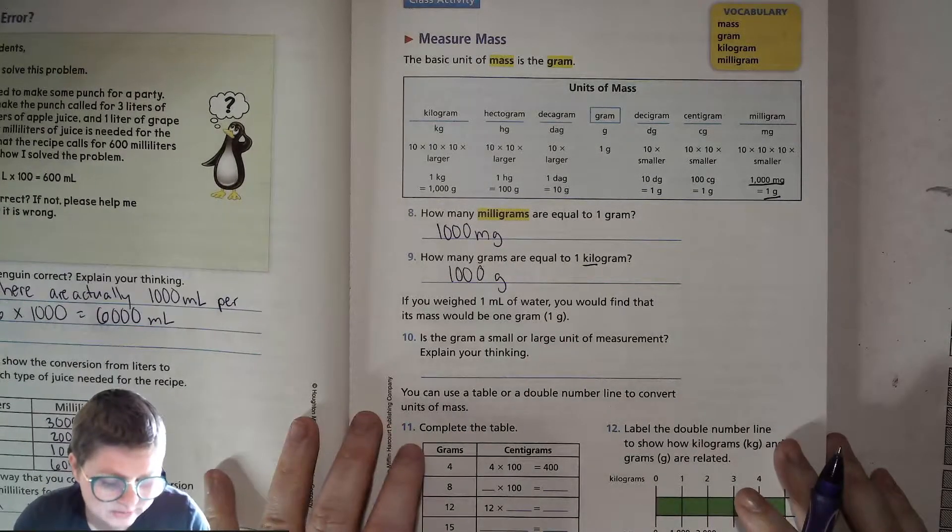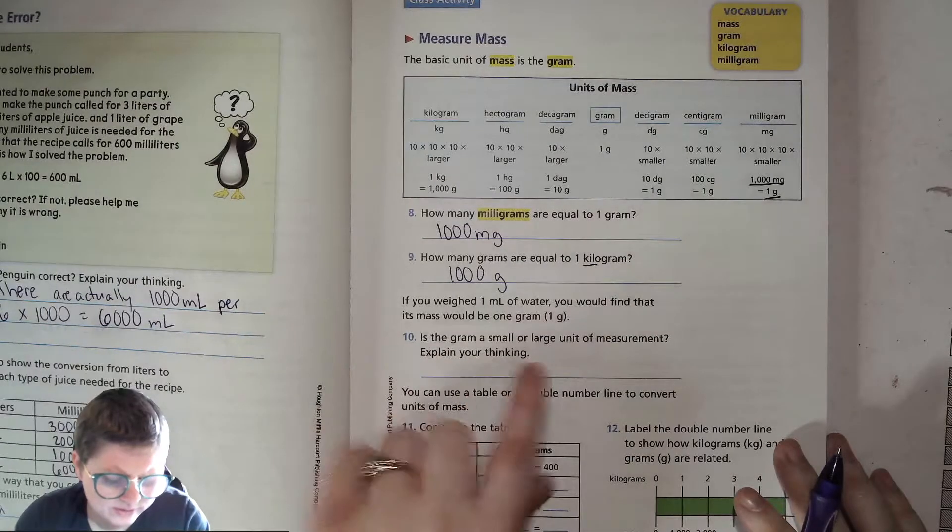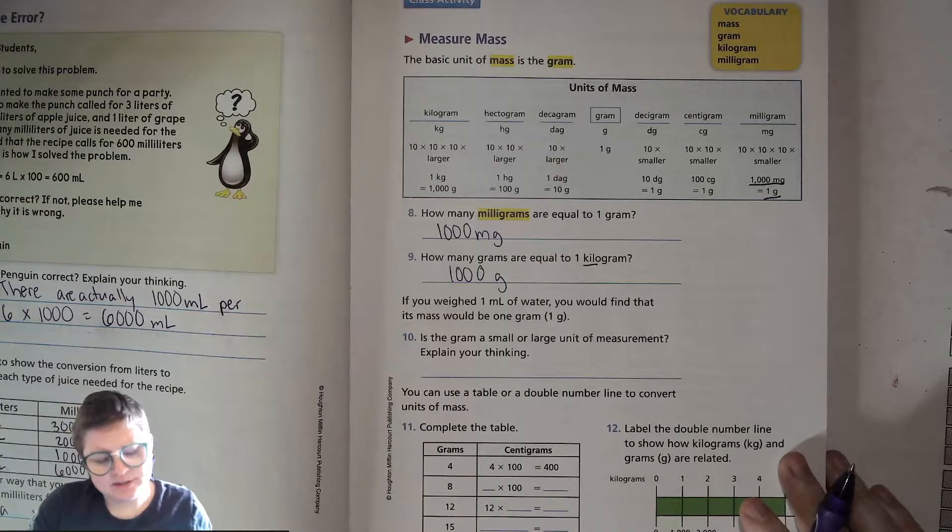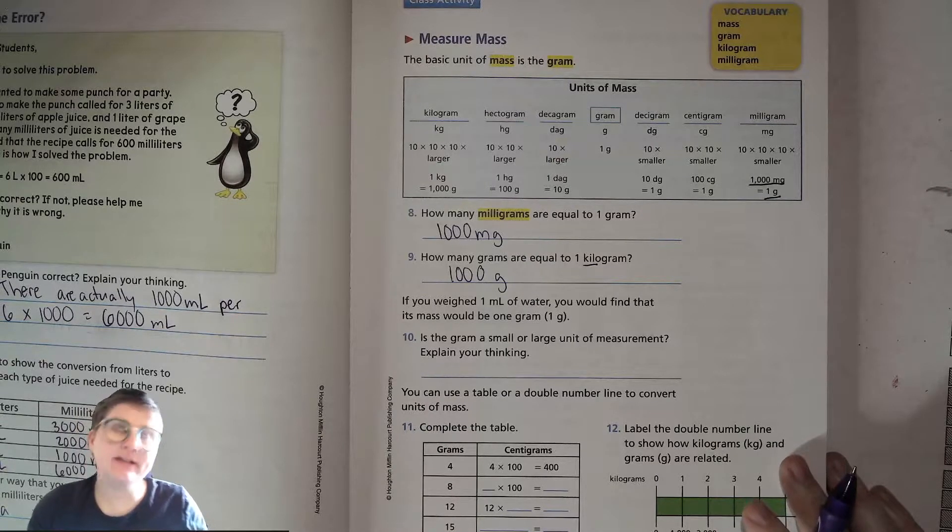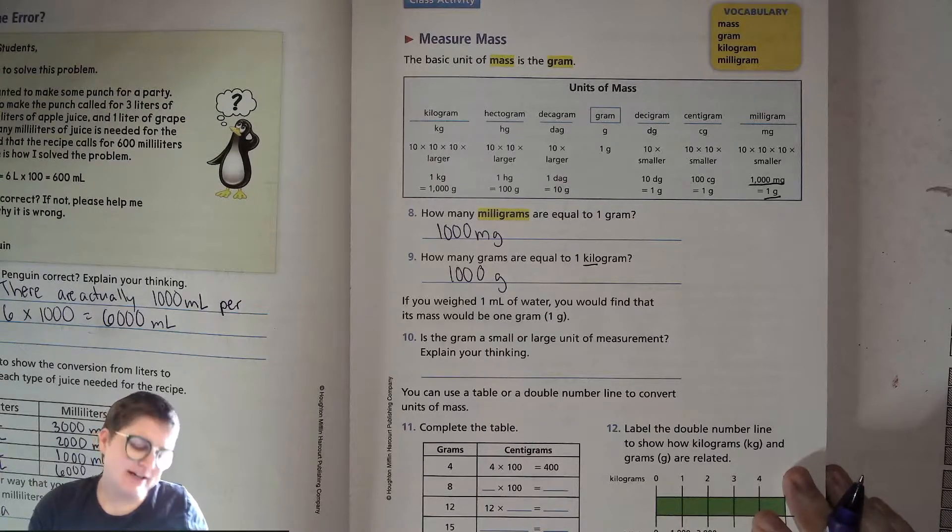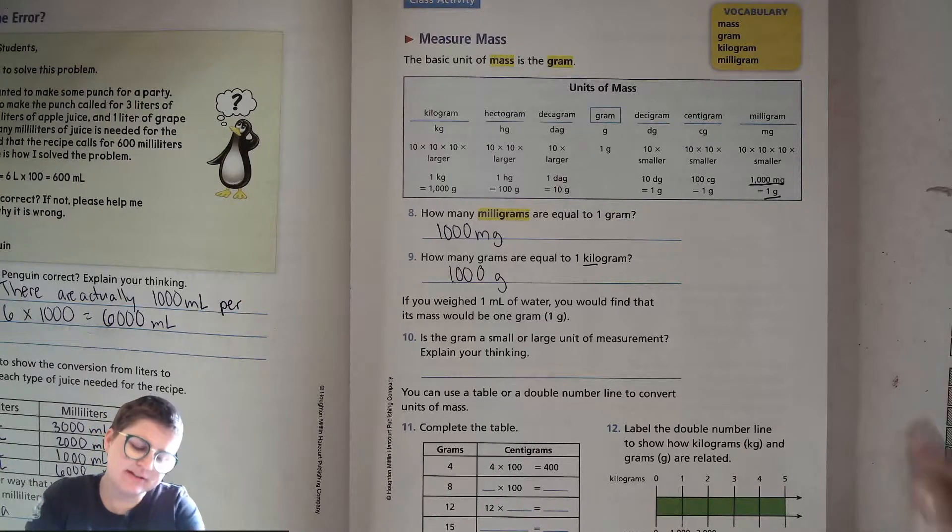Is the gram a small or large unit of measurement? Explain your thinking. It's pretty small. Unless, I mean, yeah, it's pretty small. It's like a paperclip, right?